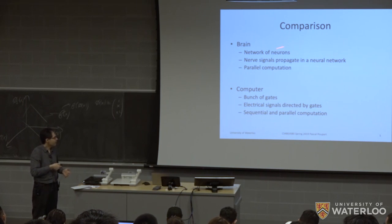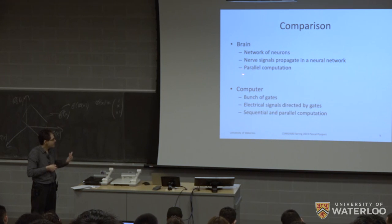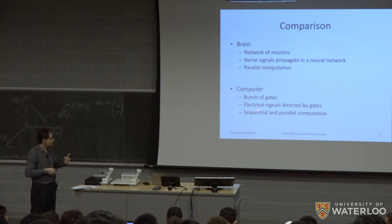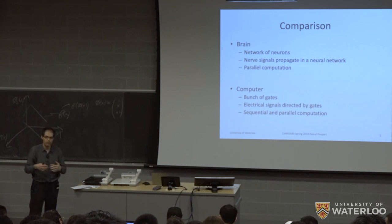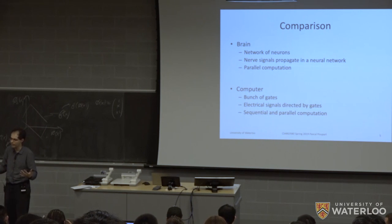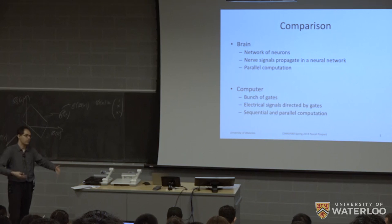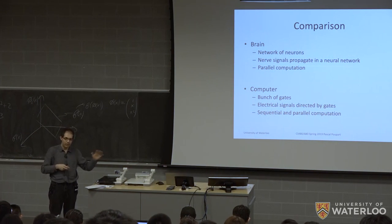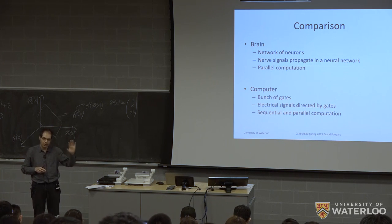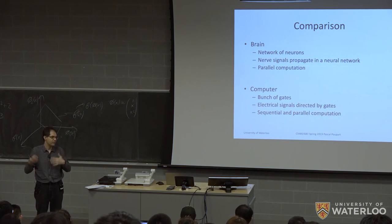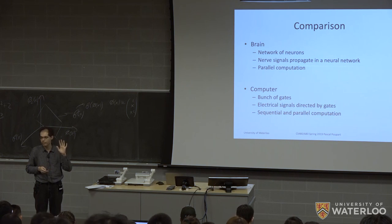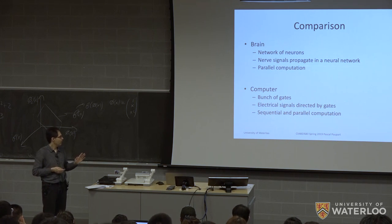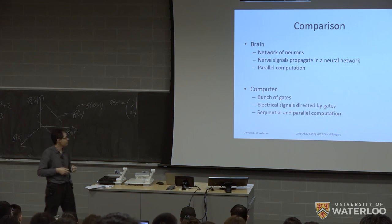In the brain, signals propagate in a way where the computation is largely parallel. For computers, historically, computation was mostly sequential. Today we have distributed systems and GPUs where computation can be parallelized, but a large part of CPU computation is still sequential. In comparison, the brain is mostly parallel.